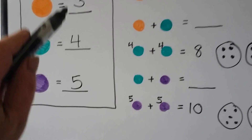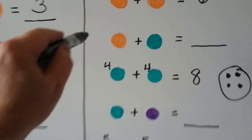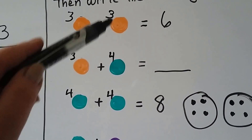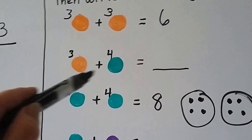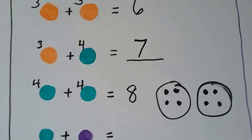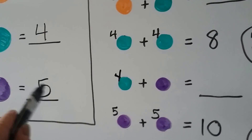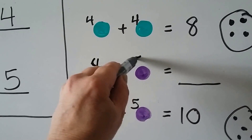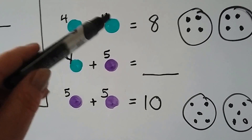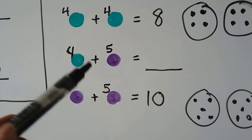Now that we've finished the key, we can answer the remaining problems. Orange is 3 and green is 4. If 3 plus 3 equals 6 and 4 is 1 more than 3, the sum must be 1 more than 6 — so 3 plus 4 must equal 7. The green circles equal 4 and the purple circles equal 5. If 4 plus 4 is equal to 8 and 5 is 1 more than 4, then 4 plus 5 is 9.